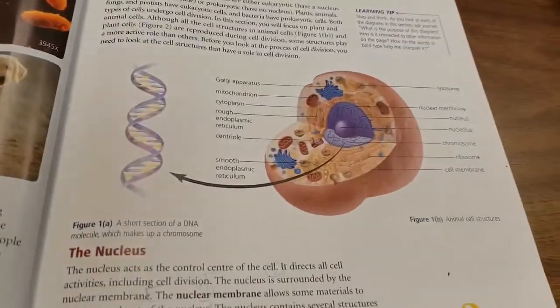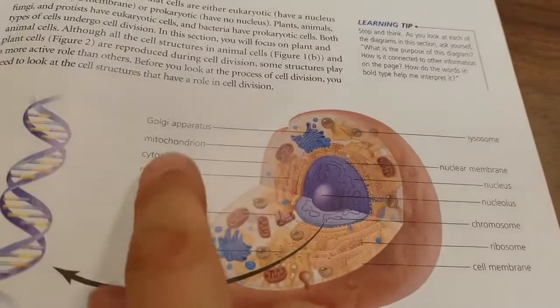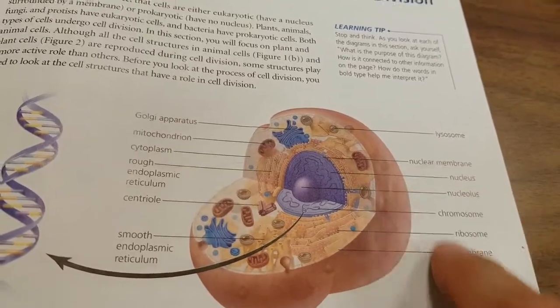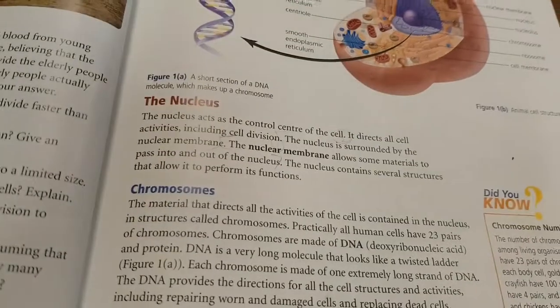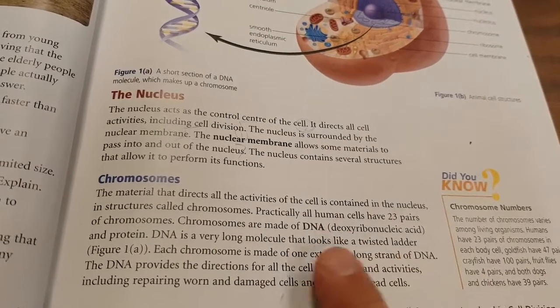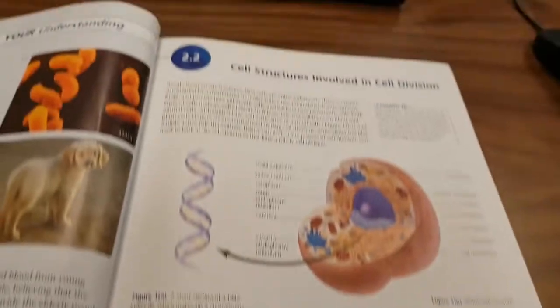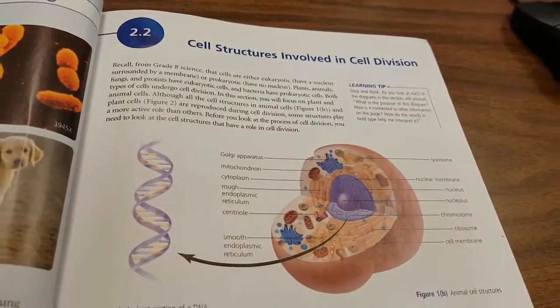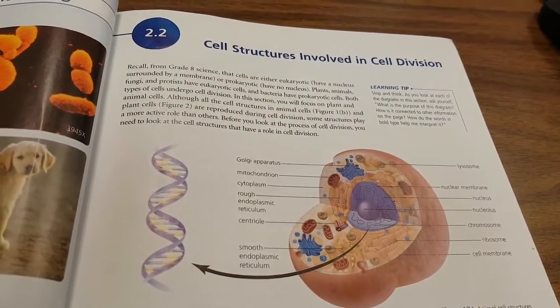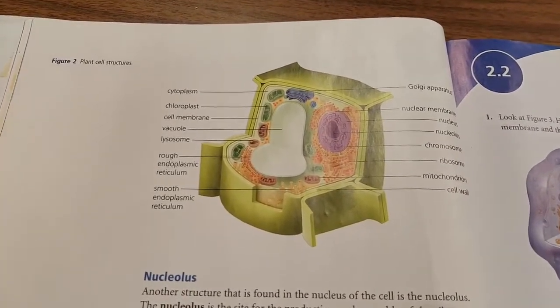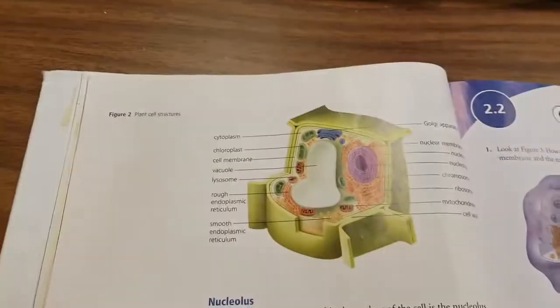Then we just went over the basic parts of the cell — the parts we learned last year — just to really help us get ready to look at DNA and how it might be structured, and also to prepare us for when the cells divide. We're more interested in the parts that deal with cell division, and that would be the nucleus, the chromosomes, and the centrioles in animal cells.